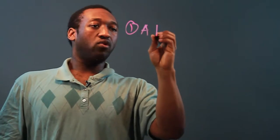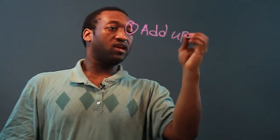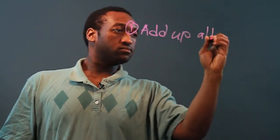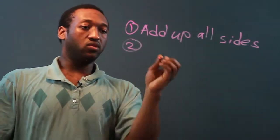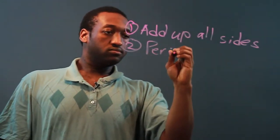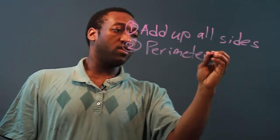One way to measure the perimeter is to add up all the sides, all the outsides of a shape. And the second way is to use a perimeter formula, and that's going to depend on the shape.